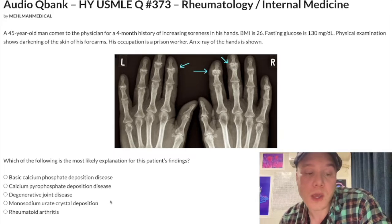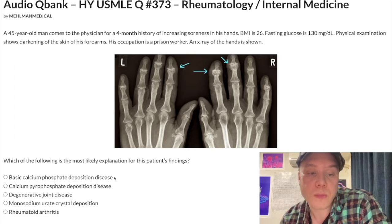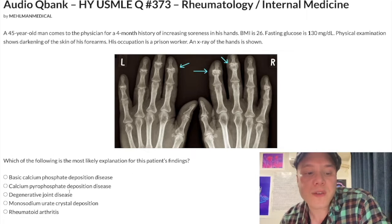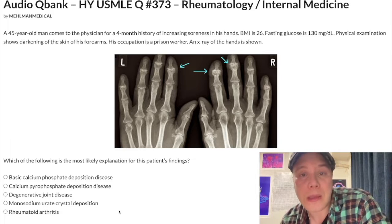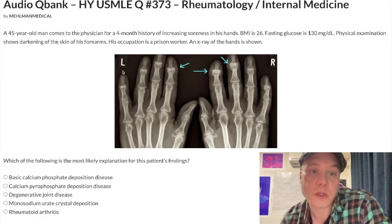Very challenging, very difficult. Pseudogout crystals are rhomboid-shaped, blue under polarized light, and positively birefringent. In contrast, monosodium urate (gout) crystals are needle-shaped, yellow, and negatively birefringent. Gout can affect the hands, but with this picture — DIP involvement, OA-like presentation in hemochromatosis or primary hyperparathyroidism — the answer is pseudogout. Choice A, basic calcium phosphate deposition disease, causes Milwaukee shoulder; that's low-yield. You treat pseudogout and gout acutely the same way: NSAIDs, indomethacin, colchicine, or steroids. Chronically, you treat the underlying condition — for hemochromatosis, that's serial phlebotomy.